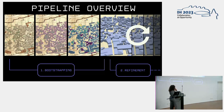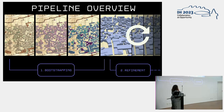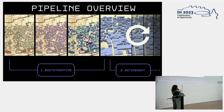This is the structure of the pipeline we propose. We suggest imagining the pipeline as one linear part which we call bootstrapping, and a second part called refinement which is circular. The idea is that when dealing with historical sources, we first create a vectorized version of our data with layers of information and build a first 3D model. We then use this 3D model as a canvas — a geospatial database that can be refined over time.